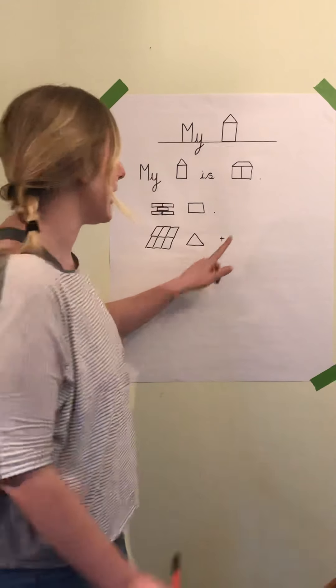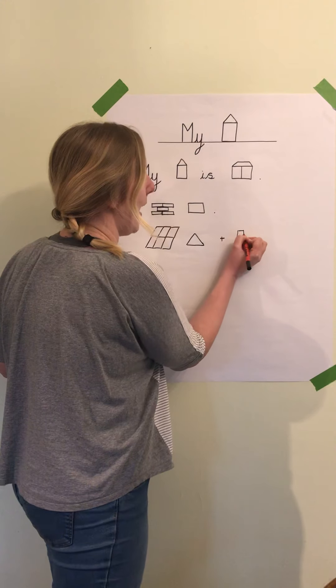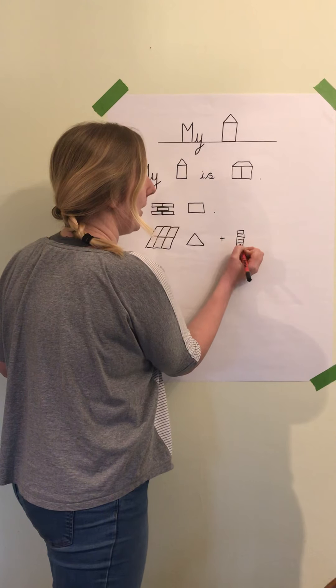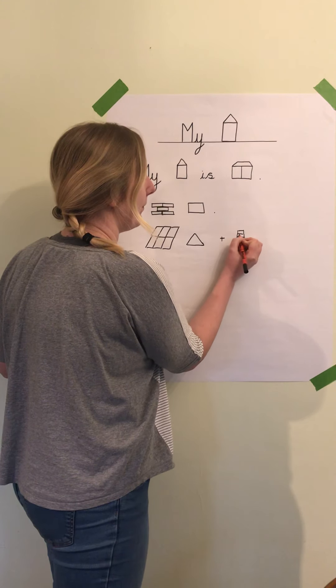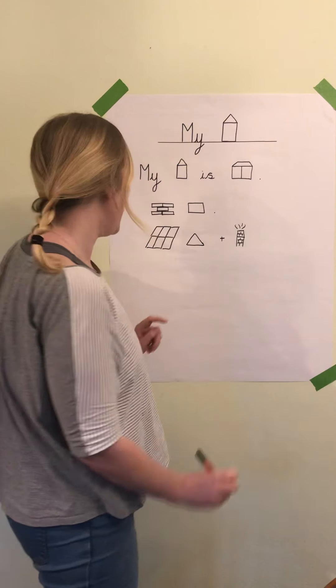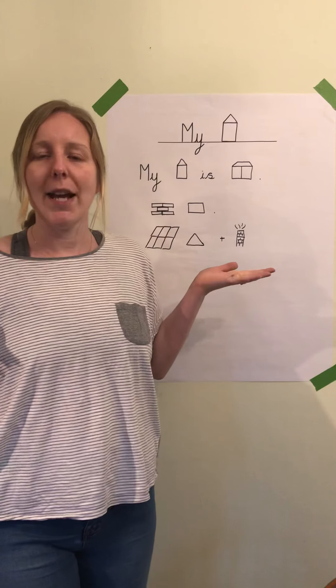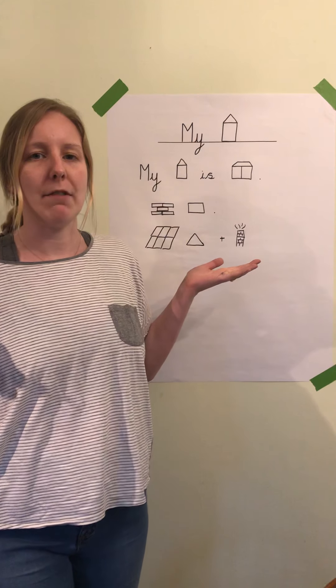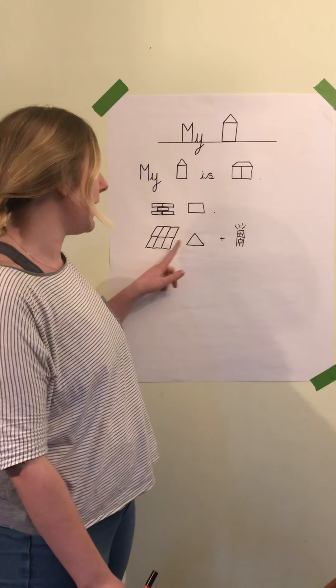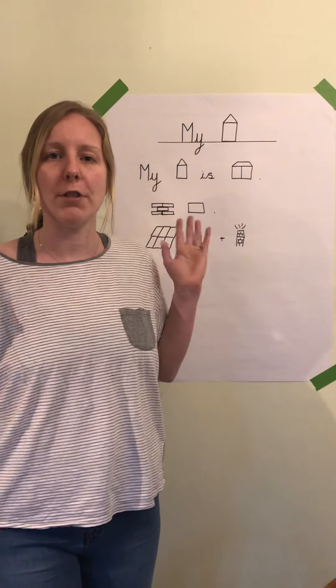Oh, we know how to draw a chimney, don't we, from when we were drawing our Three Little Pigs story map? There, so a slate roof and a chimney. You might not have a chimney on your house, but you might have a garage, so instead of that you might write 'and a garage.' It is up to you depending on what your house looks like.